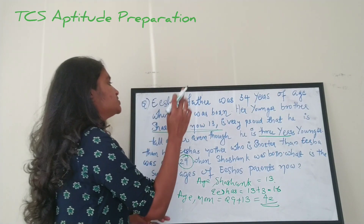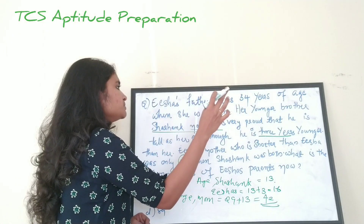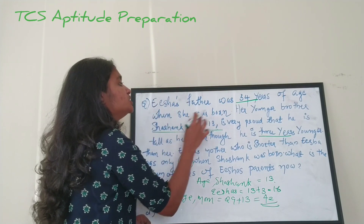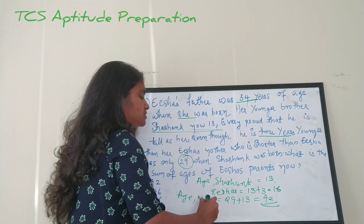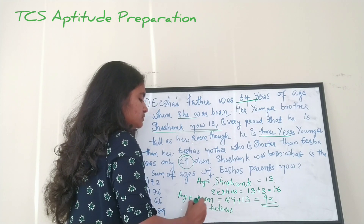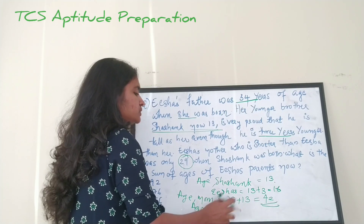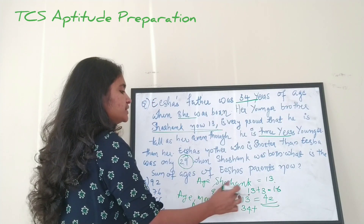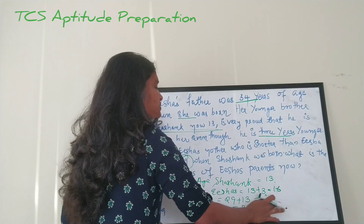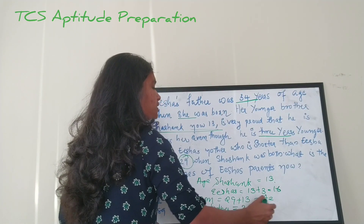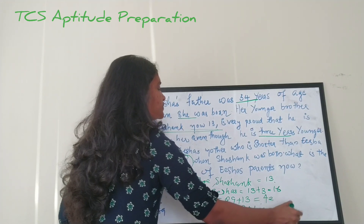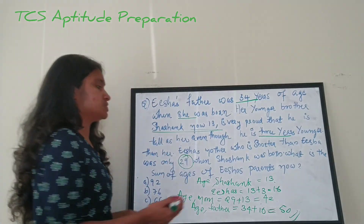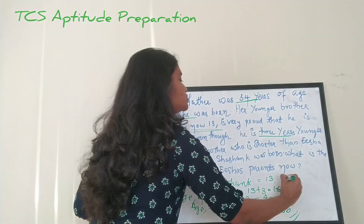Now we find Isha's father's current age. The first sentence says Isha's father was 34 years of age when she was born. So the father's current age equals 34 plus Isha's current age of 16, which gives 50. We now have mom's age as 42 and dad's age as 50.